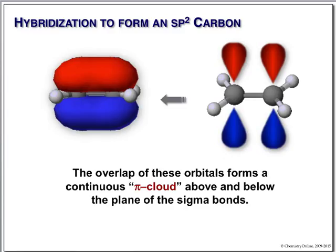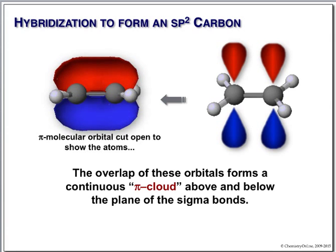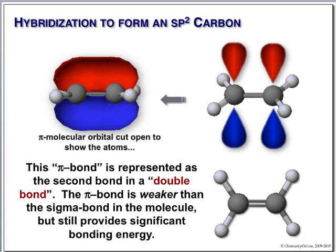These p orbitals show up on each carbon. When these orbitals align with each other, they can overlap. As they overlap, they form a continuous electron cloud that's above and below the plane of the sigma network. When we say we have a carbon-carbon double bond, one bond is our sigma bond, and the second bond is this pi bond, where we have these p orbitals overlap to form this arrangement of electron density above and below the plane.